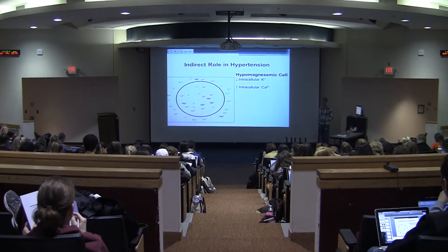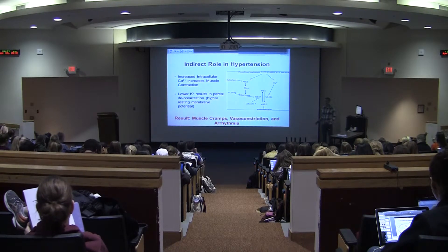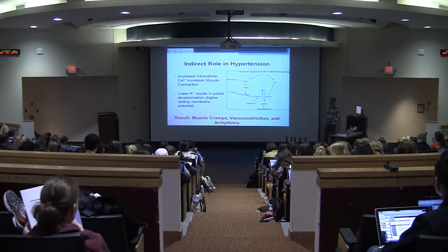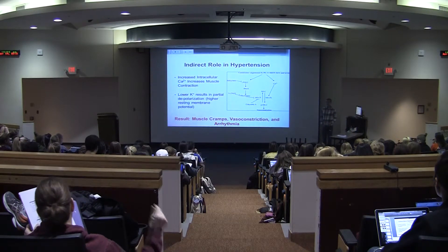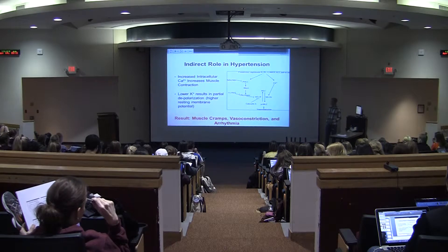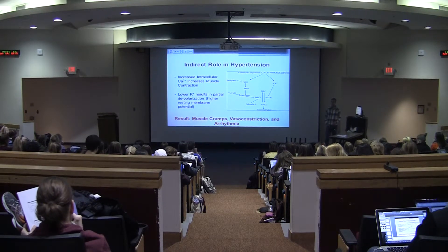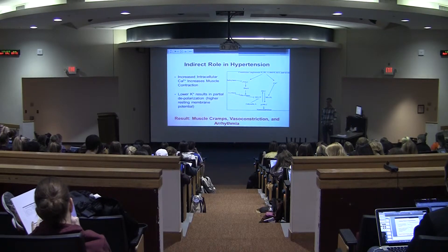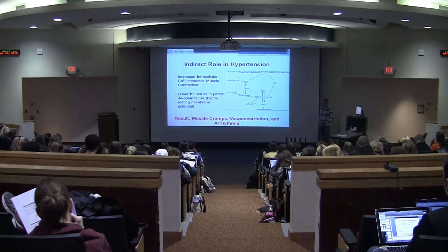It also results in increased intracellular calcium due to the fact that magnesium is no longer blocking calcium channels. When you have an increase in intracellular calcium, you'll have an increase in muscle contraction. Calcium should generally be fairly low in the cytosolic space — the initiation of muscle contraction, if you've taken exercise physiology, involves calcium being released from the endoplasmic reticulum into the cytosolic space. That occurs through the binding of calcium to myosin light chain kinase, which activates the myosin light chain and leads to muscle contraction.